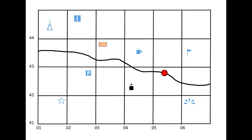I've provided you with a map extract with several different symbols on it. I want you to try creating four-figure grid references for the rest of the symbols on this map. I'm going to put all the answers in the description below.